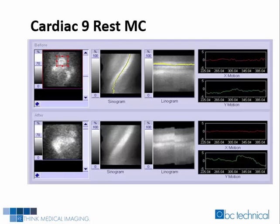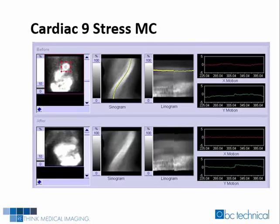Cardiac IX's resting study showed around 2 pixels of motion. The motion corrected dataset exaggerated the motion and displayed over 5 pixels of motion after automatic motion correction was applied — increasing the motion from 2 to 5 pixels. Cardiac IX's stress study showed greater than 2 pixels of motion before automatic motion correction was applied. The motion corrected dataset displayed a study with relatively the same 2 pixels of motion.